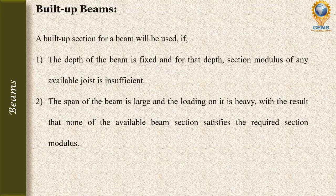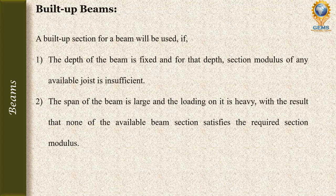Built-up beams are used when the depth of the beam is fixed and the section modulus of any available I-section is insufficient for that depth. Also, when the span of the beam is large and the loading is heavy, none of the available beam sections satisfy the required section modulus — then we go for built-up beams.